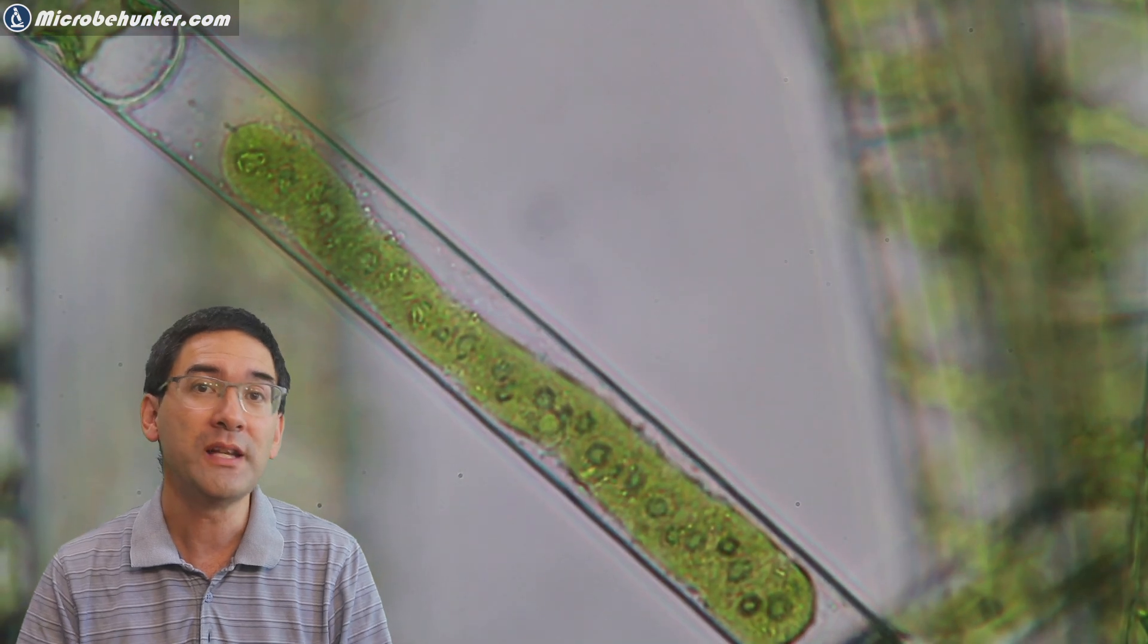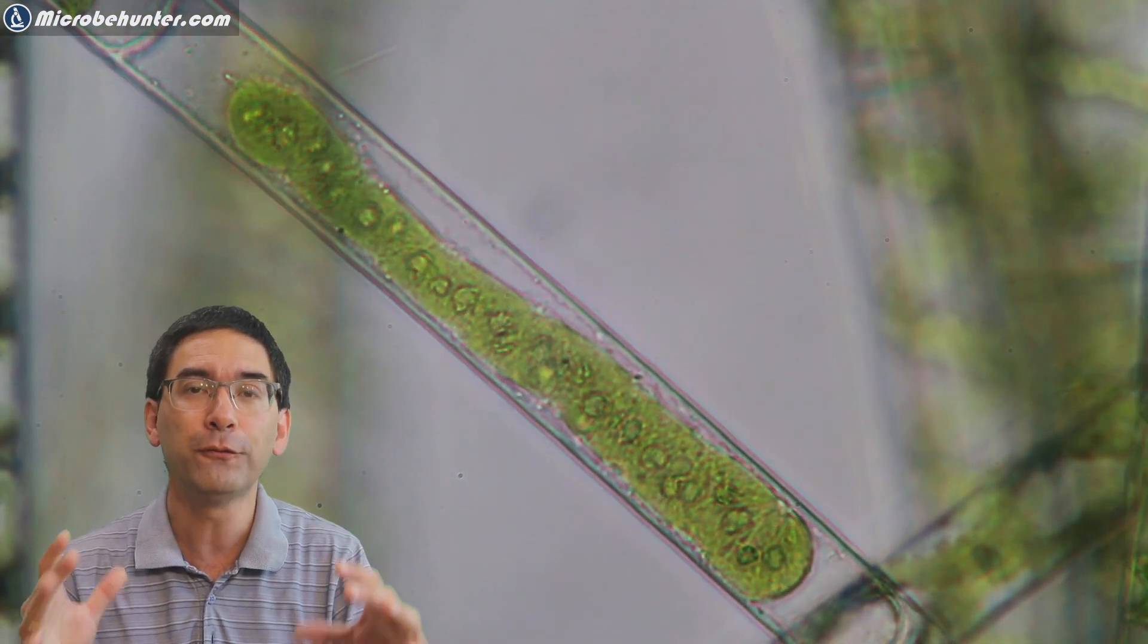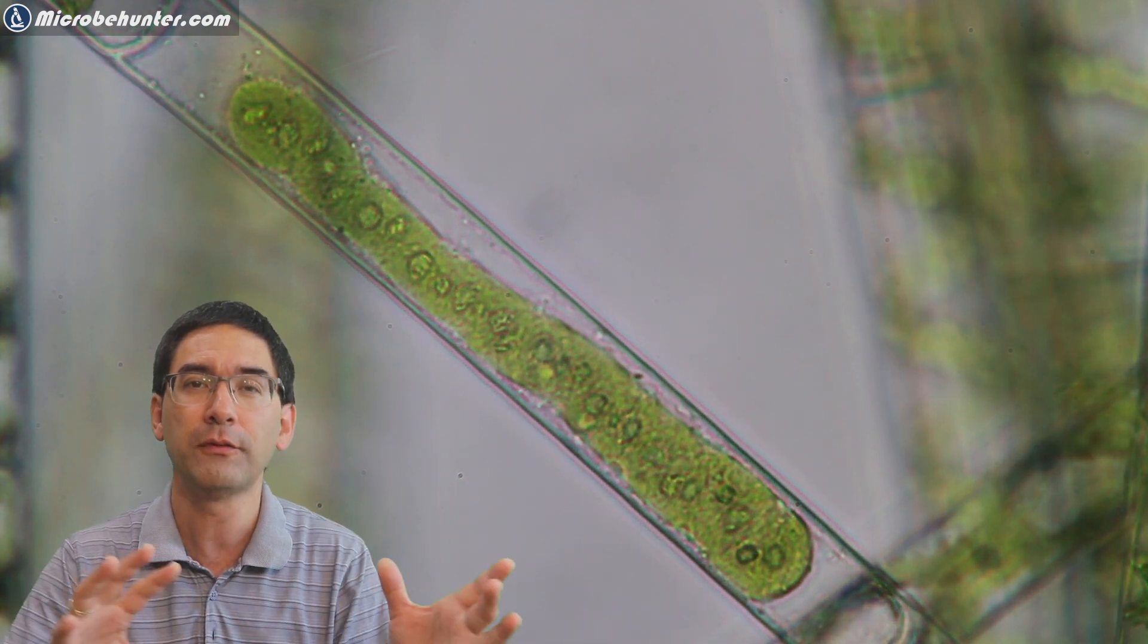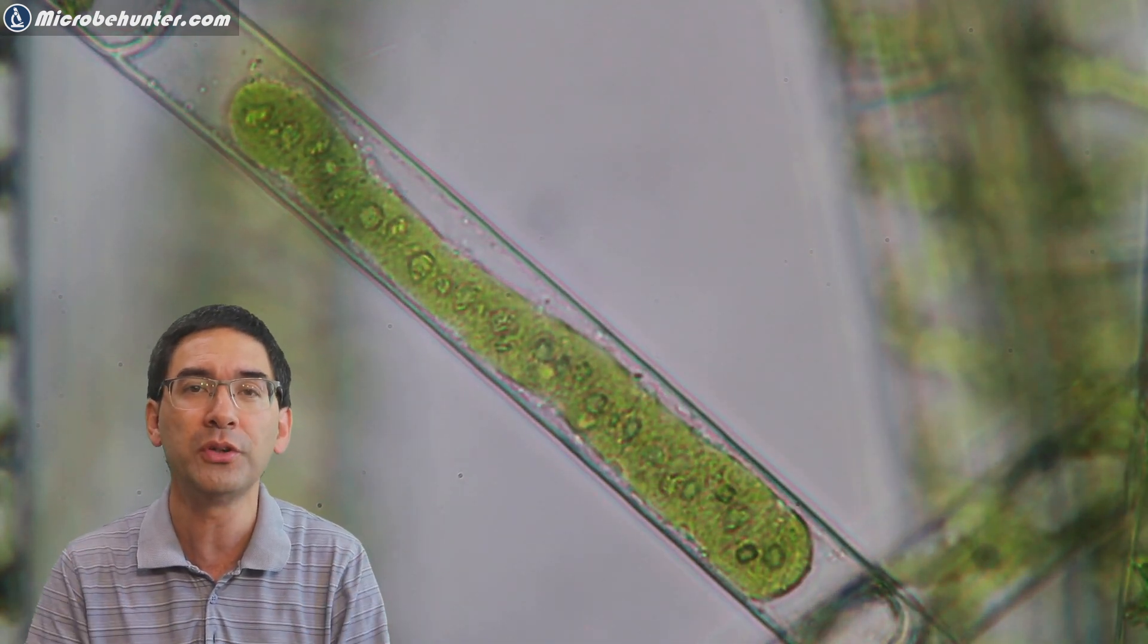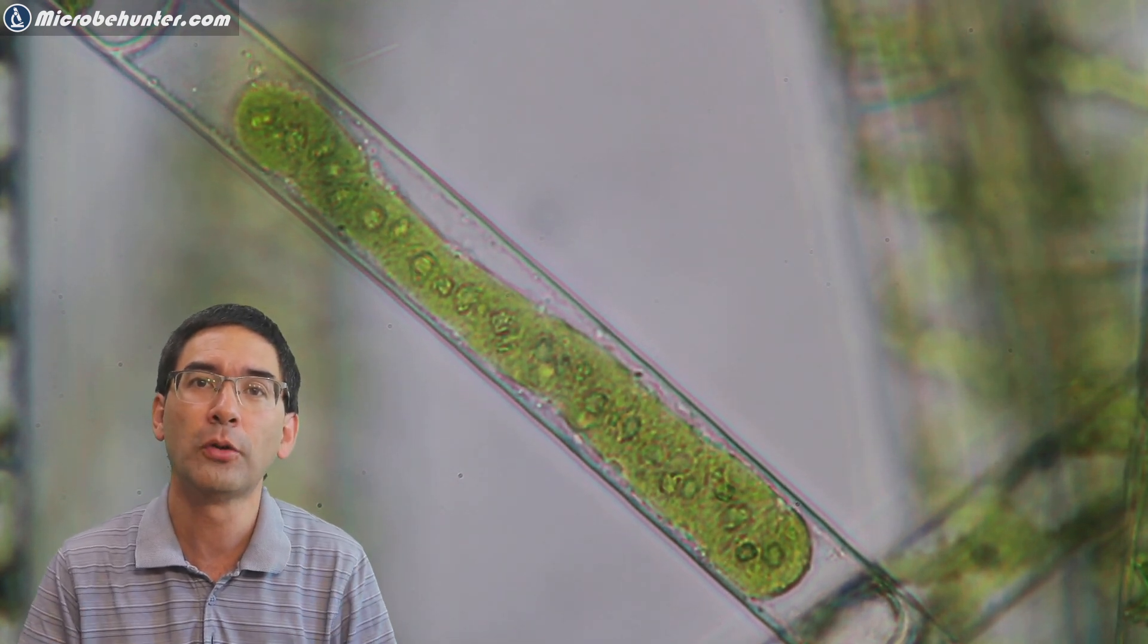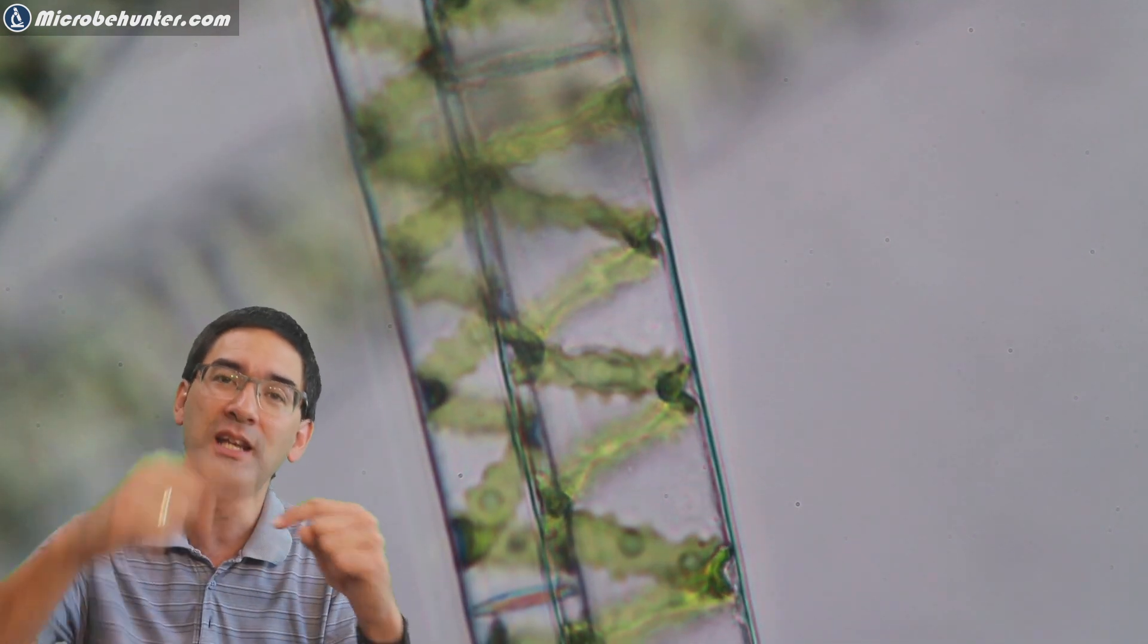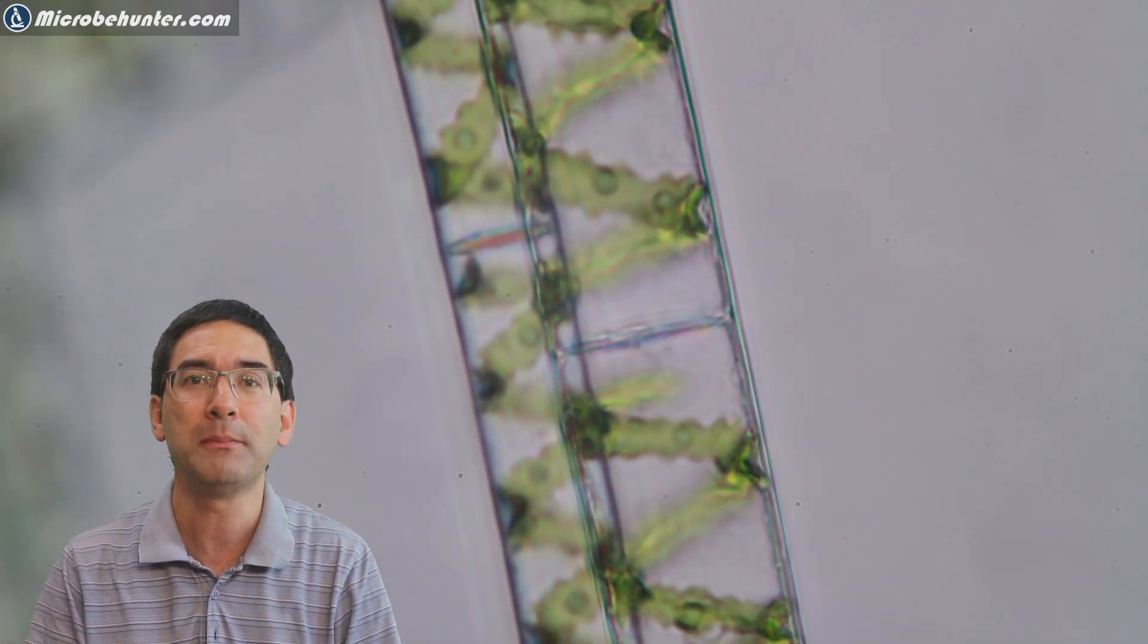The chloroplast in spirogyra is spiral shaped but occasionally there are cells in there that have a different shape. Now I don't know if this is already some kind of form of a cell specialization going on here, I have to do a little bit more research. If you know maybe why some of the chloroplasts have a different shape please write this into the comments section. By focusing back and forth you can actually see that the chloroplast is a spiral shape.